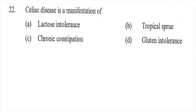Question twenty-two: Celiac disease is a manifestation of — option A lactose intolerance, option B tropical sprue, option C chronic constipation, or option D gluten intolerance. The right answer is D, gluten intolerance.